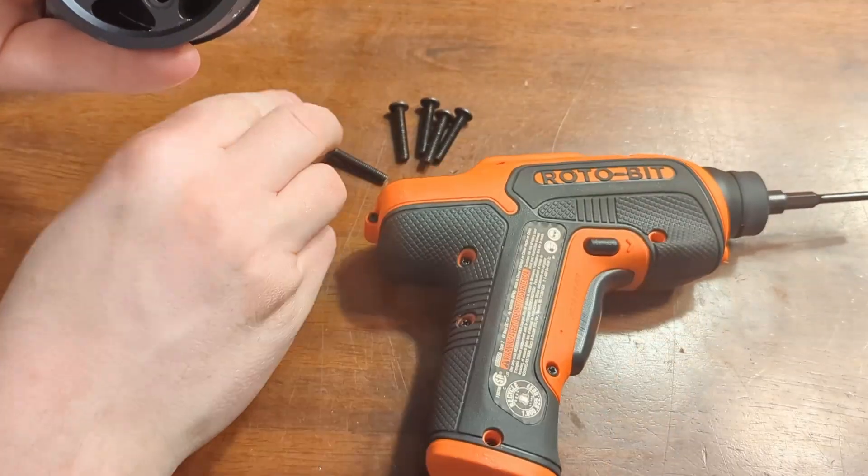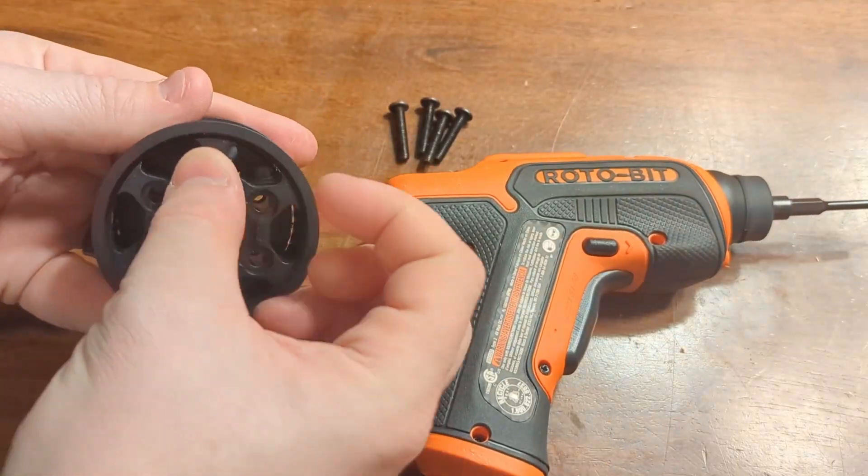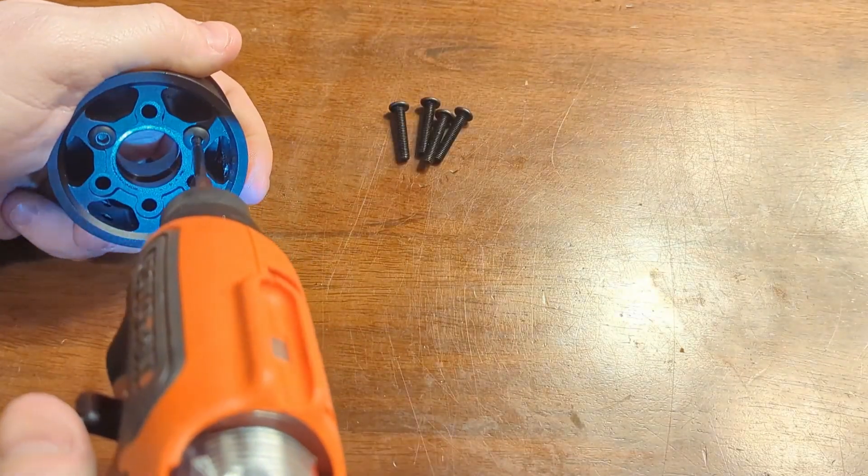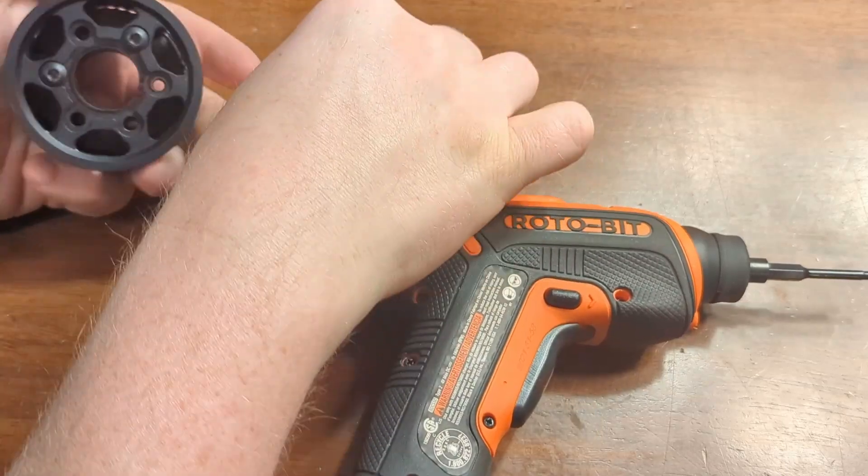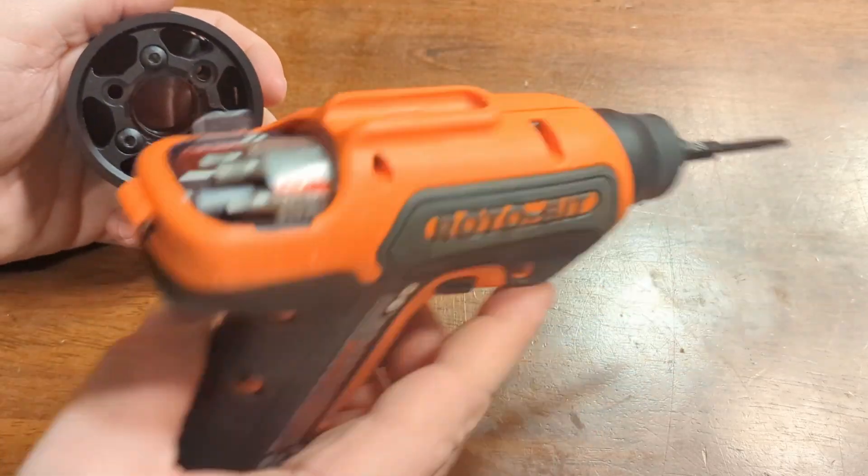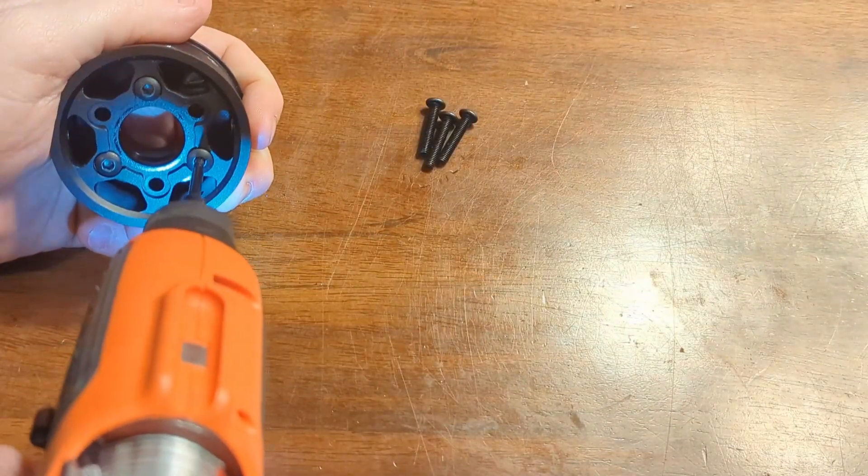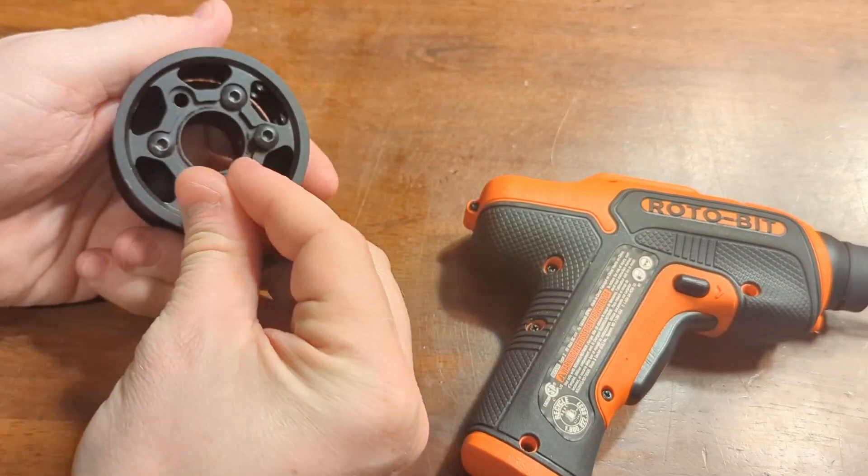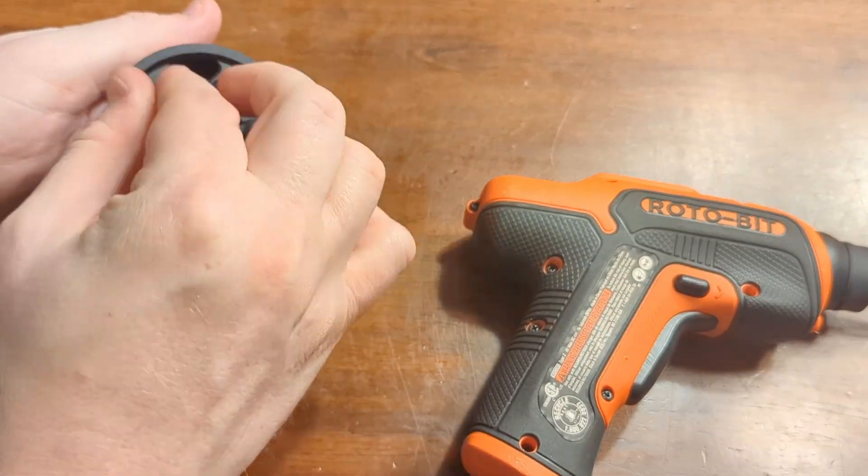I generally like to attach them in a star pattern. So put the first one in and then skip a hole and then put the next one in and skip another hole and put that third one in. Just so everything kind of tightens evenly. And finish up with the other three.